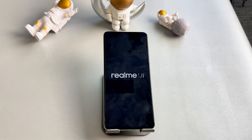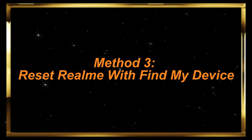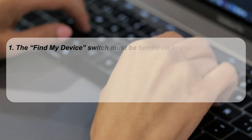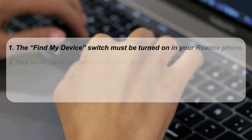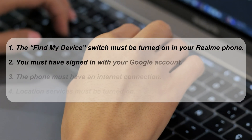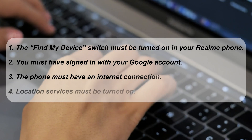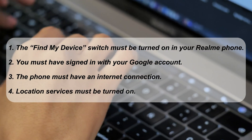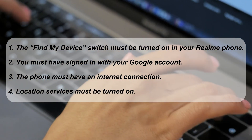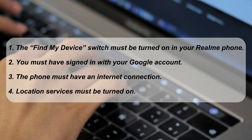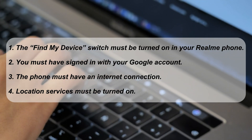Method 3 – Reset Realme with Find My Device. Before using the Find My Device feature, ensure that you meet the following conditions: one, the Find My Device switch must be turned on in your Realme phone; two, you must have signed in with your Google account; three, the phone must have an internet connection; four, location services must be turned on.